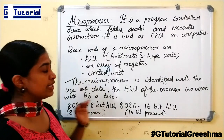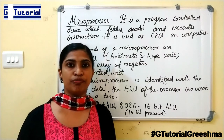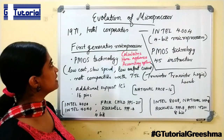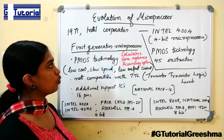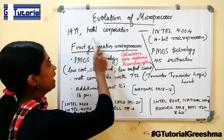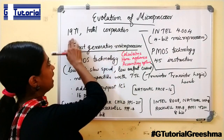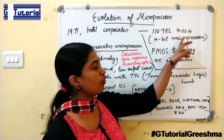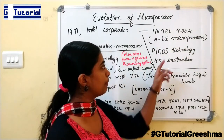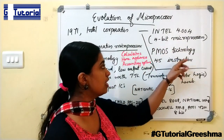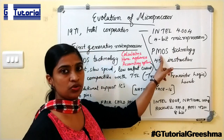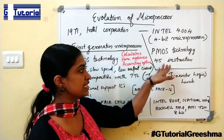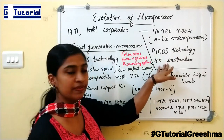Now let us see about the evolution of microprocessors. The first microprocessor was released by Intel Corporation in 1971. It was Intel 4004, a 4-bit microprocessor that used PMOS technology. The instruction set had a size of 45 instructions.